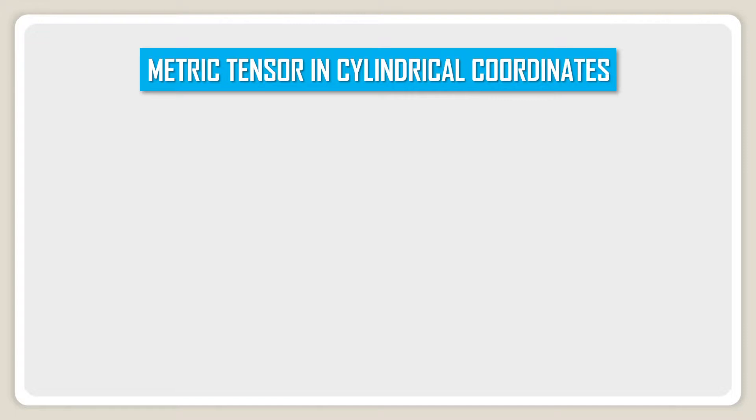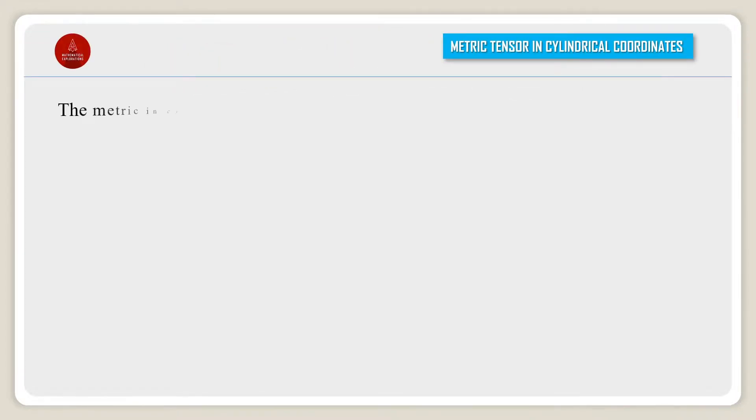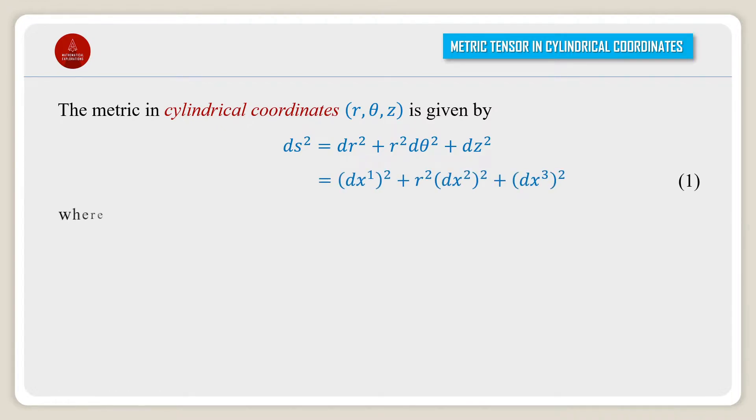Metric tensor in cylindrical coordinates. The metric in cylindrical coordinates r, theta, z is given by ds² = dr² + r²dθ² + dz², which can be written as (dx¹)² + r²(dx²)² + (dx³)².